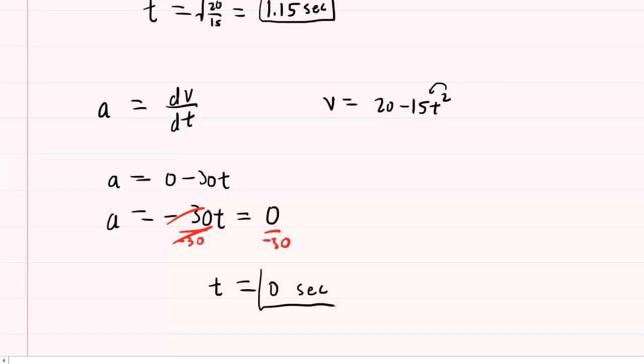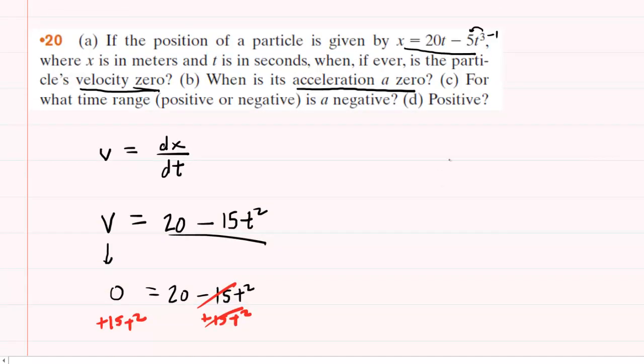And we can see that t would equal zero. So the acceleration of the particle is zero when the time is zero. So this would be the correct answer to part B of the question. And then we have parts C and D. They want the time range for which the acceleration is negative and then positive.